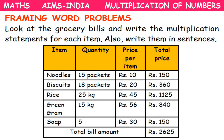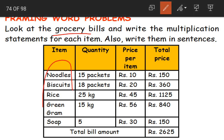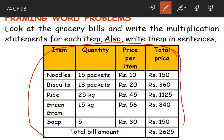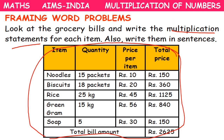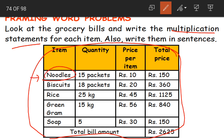Now let us see how to frame word problems. Framing means giving the question for the word problem. Look at the grocery bill and write the multiplication statement for each item, and also write them in sentences. Groceries are items we get from the store — food items as well as soaps, shampoos, toothpaste, toothbrush. First item is noodles: 15 packets were bought and the price per packet is 10 rupees.